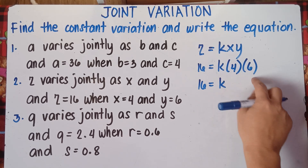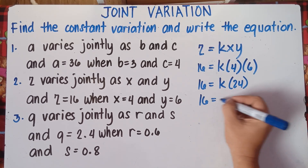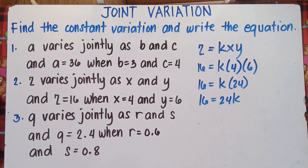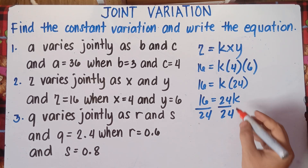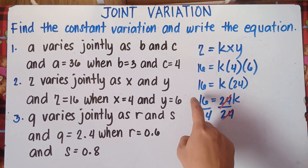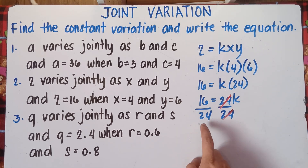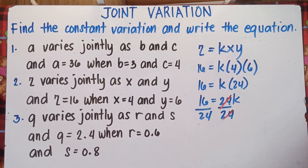So 16 equals 24K. To get K, divide both sides by 24. Now, if you divide 16 by 24, you get a decimal answer, which can be confusing. So instead, we reduce the fraction. K equals 16 over 24. Always reduce the fraction to its lowest term — that is mandatory. What is the GCF of 16 and 24? That's correct, it's 8.